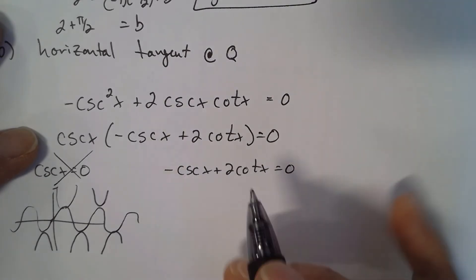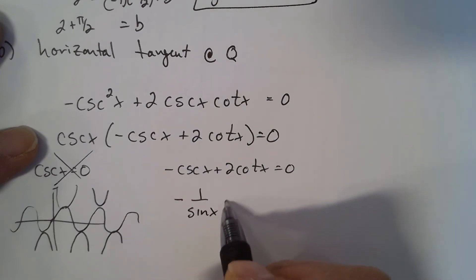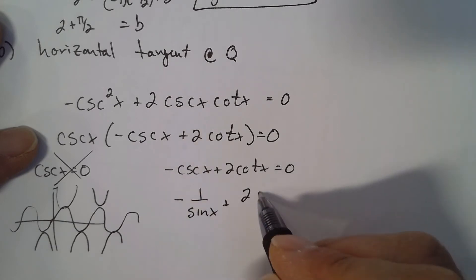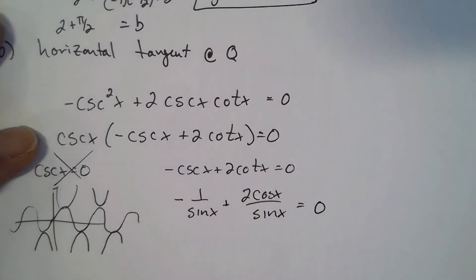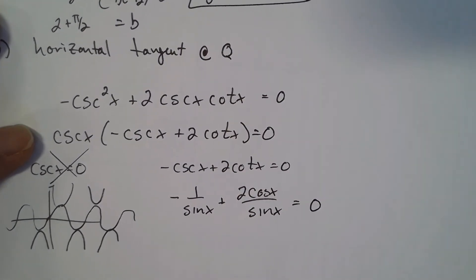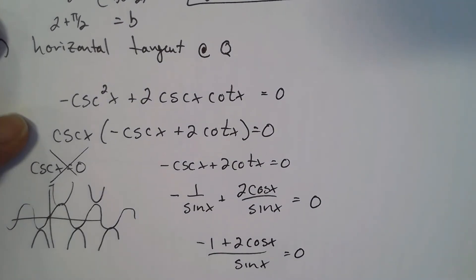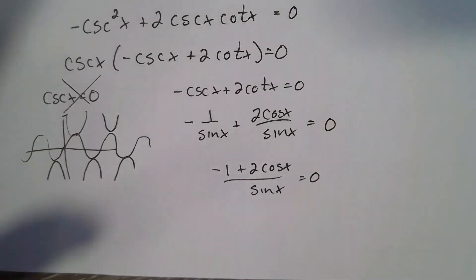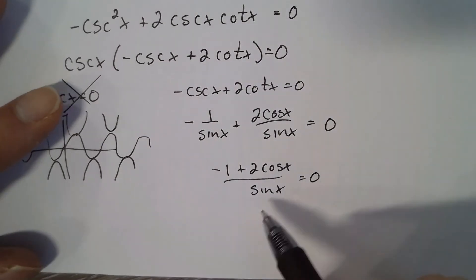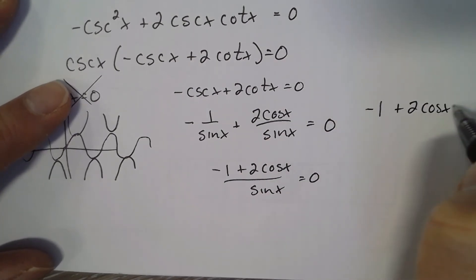When in doubt, write in terms of sines and cosines. Cosecant is 1 over sine x, and cotangent is cosine over sine. Combining over the common denominator sine x gives (-1 + 2 cos x) / sin x = 0. The only way a fraction equals 0 is if the numerator is 0, so we can discard the denominator.